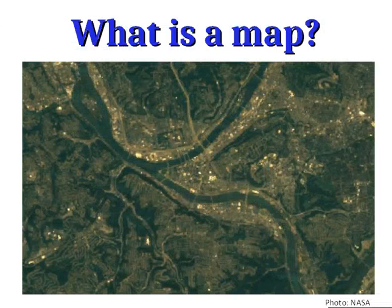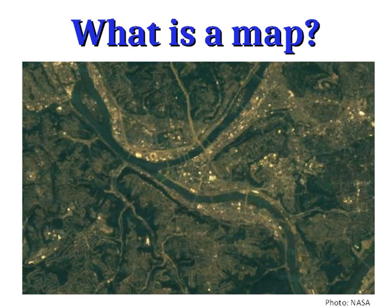When we think about maps, we often imagine that a map is just like a picture of the Earth. Here's a picture of the Earth — specifically of the city of Pittsburgh, taken from space. But this isn't really a very helpful picture. We can make some guesses about what's going on: that looks like a river, that looks like a road. But it isn't really a very good map if you just have a picture.